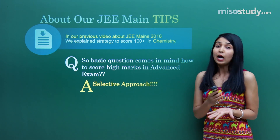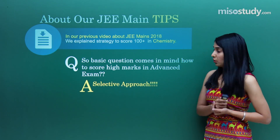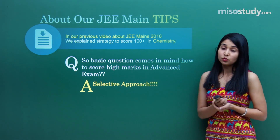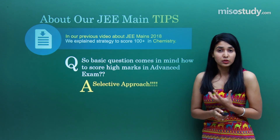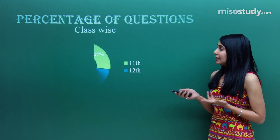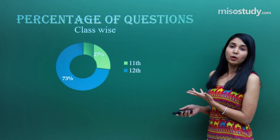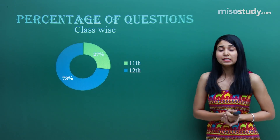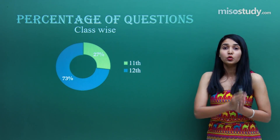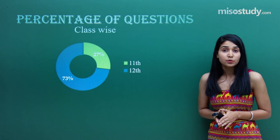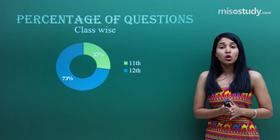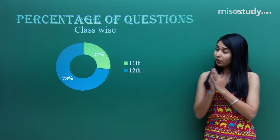Talking about what to do and how to score maximum in JEE Advanced — a selective approach is what we need. Then how to start with it and what to do. If I talk about your percentages, Chemistry is a subject that covers the maximum of the 12th class syllabus, and that is a plus point because now we are more in the context of the 12th standard syllabus.